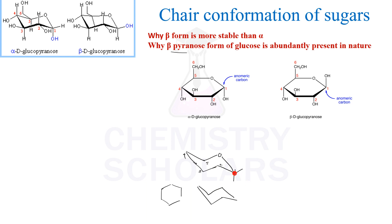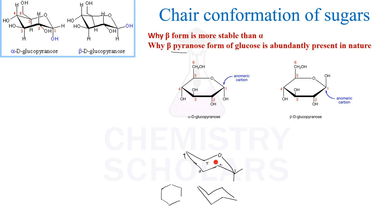Starting with this carbon atom, draw the axial bond down, then alternate up, down. So first we will draw all the axial bonds. These are the axial bonds and the crossing ones are the equatorial. So this is axial, equatorial. Now we have drawn axial and equatorial. Now let's place the groups.